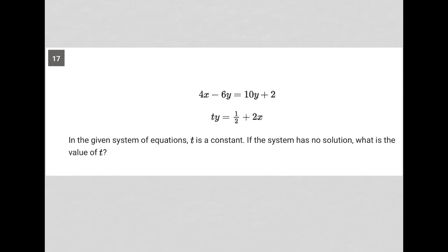This question starts off by providing us with these two equations here: 4x minus 6y equals 10y plus 2, and ty equals 1 half plus 2x.